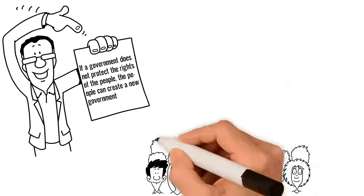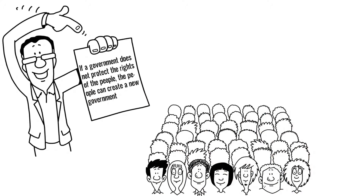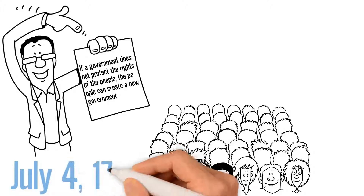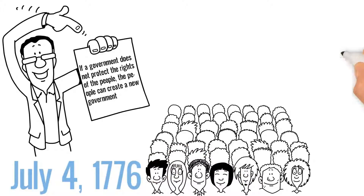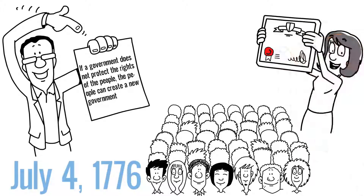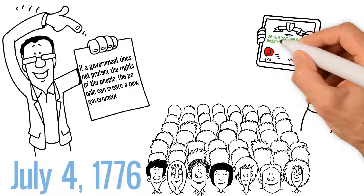For this reason, the colonists separated from their British rulers. On July 4, 1776, the Second Continental Congress adopted the Declaration of Independence.